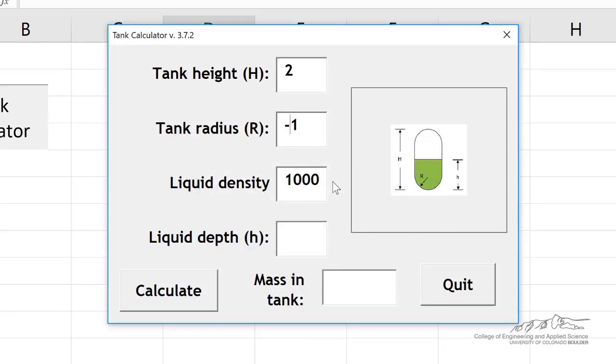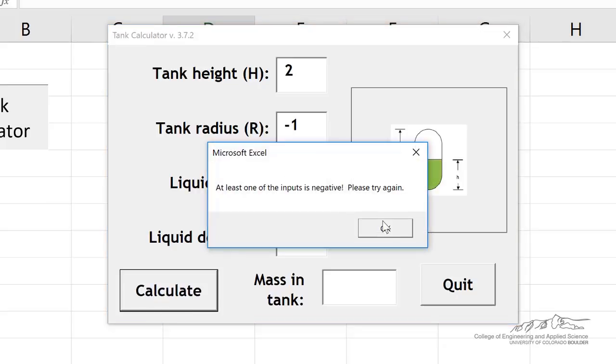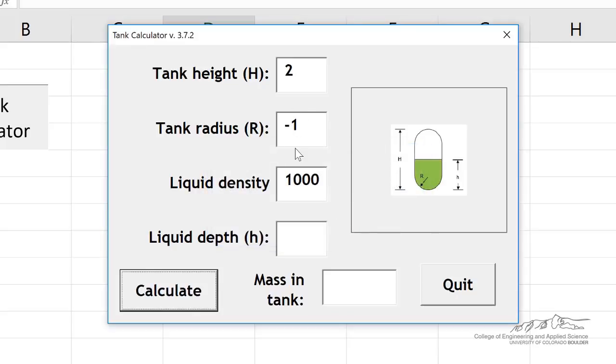If we put in a negative number, we are protecting against that, and in no way do we end up bringing up the Visual Basic Editor or that debug window, and so this is very professional. You don't ever want to scare the user with bringing up that debug window, because they don't know what's going on, and it's not very professional. So hopefully this gives you a good idea of how to validate input in VBA user forms.